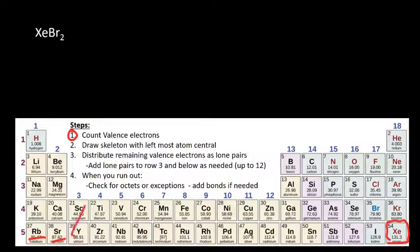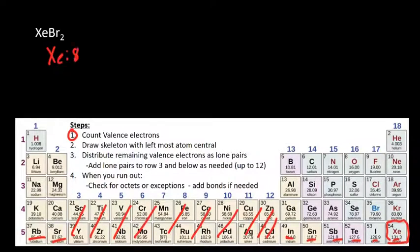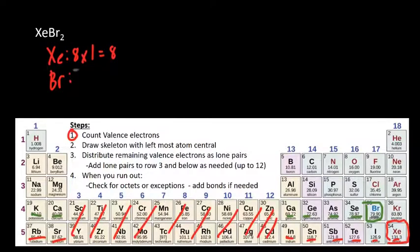Xenon has 8 valence electrons, and there's just one of them, so that's 8 total. Bromine has 7 valence electrons — we skip the D block — and we multiply that by the number of bromines, which is 2, giving us 14. We add them up and get 22 electrons. So we have 22 valence electrons to distribute around XeBr₂.